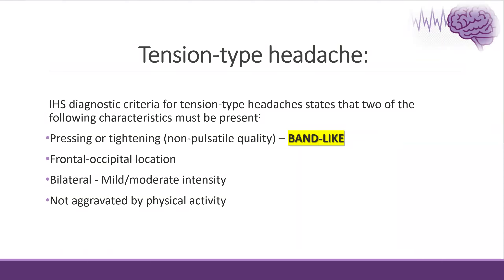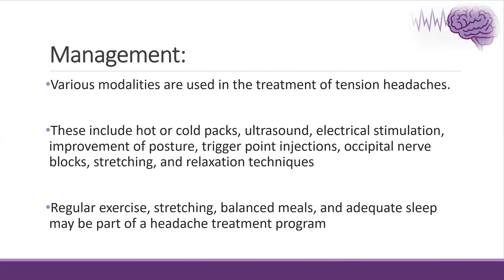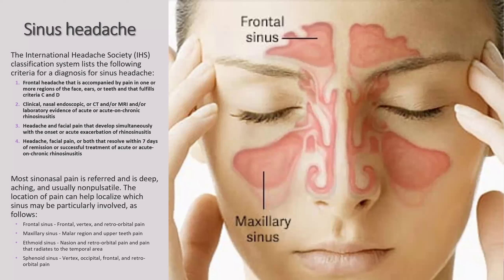Tension-type headache is also a common type of headache — usually pressing or tightening, non-pulsatile, band-like headache in the frontal-occipital location, usually bilateral, mild to moderate in severity, and not aggravated by physical activity. It is usually treated with non-pharmacological approaches like cold packs, regular exercise, stretching, balanced meals, good sleep, trigger point injection, occipital nerve block, and relaxation techniques. Sinus headache presents as a frontal headache accompanied by pain in one or more regions around the sinuses, usually developing simultaneously with the exacerbation of rhinosinusitis and resolving within around seven days of remission.